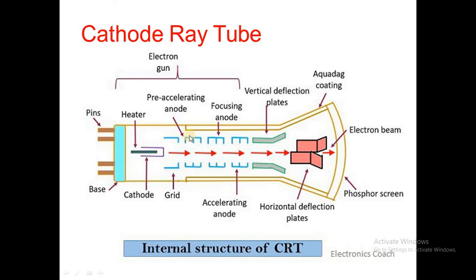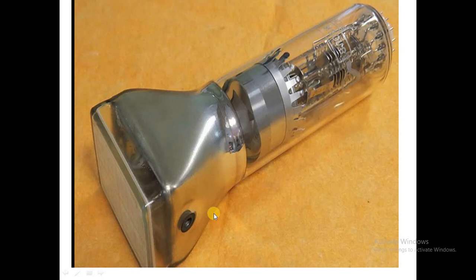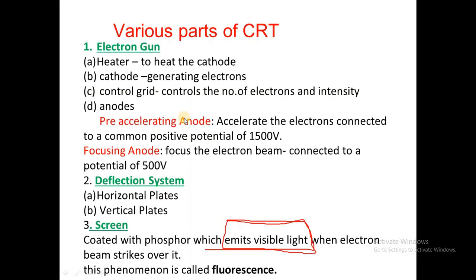Here is the CRT block diagram showing the internal structure of the CRT. The electron gun has a heater, cathode, control grid, and anodes. The main function of the heater is to heat the cathode. The main function of the cathode is to generate electrons. The main function of the control grid is to control the number of electrons and the intensity of the electrons.